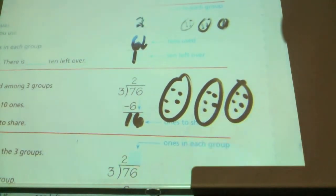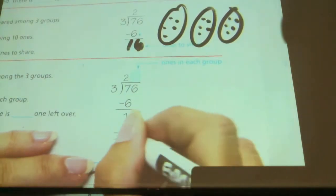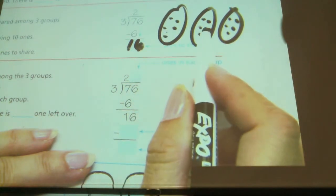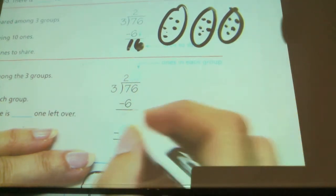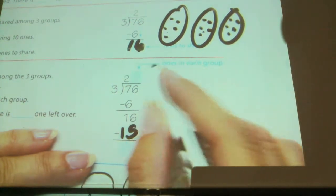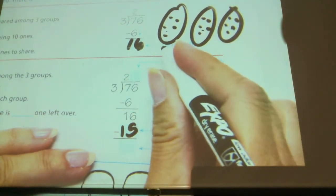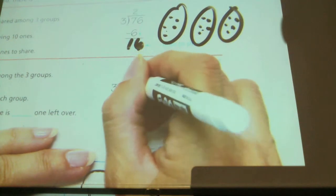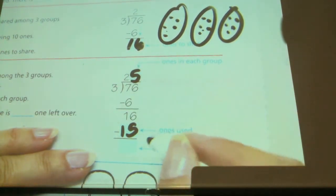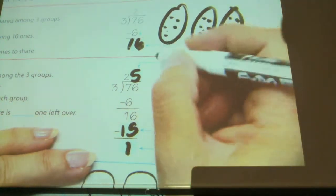So I ended up with five in each group. I used how many total? How many is this total? Fifteen. I used fifteen total. How many ones were in each group? Five. And how many ended up being left over? One. What do I call that? Remainder.